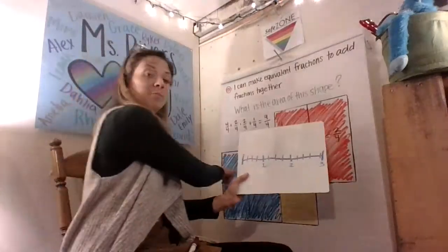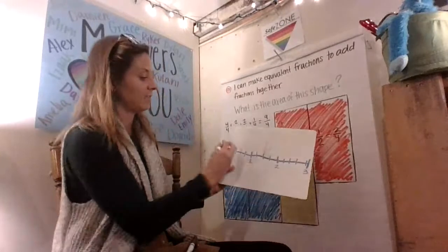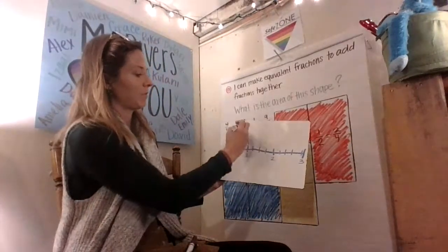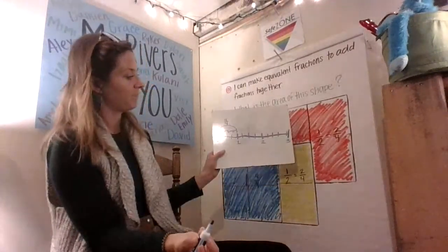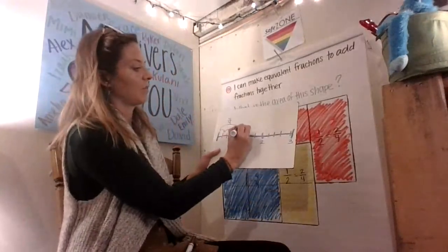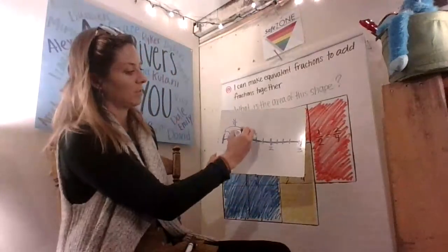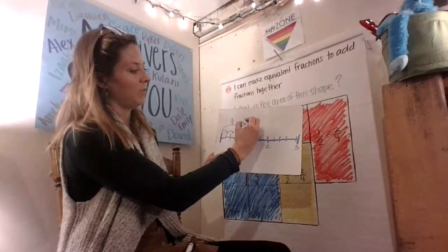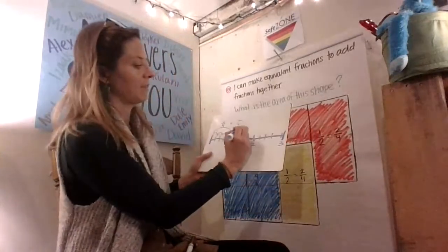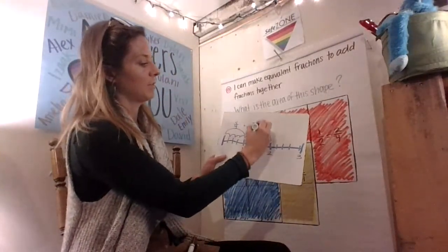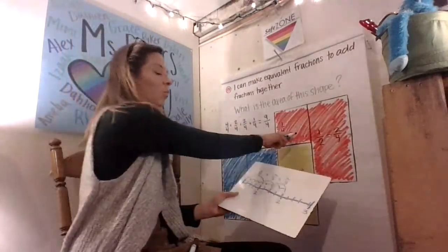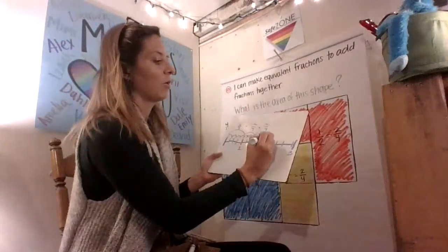Now with the blue, I had four fourths. One, two, three, four. Four fourths. Then I had two fourths with the yellow. One, two, plus two fourths. I had another two fourths with this part of the red. One, two, two fourths. Then finally, I had one more fourth on this red. One fourth.